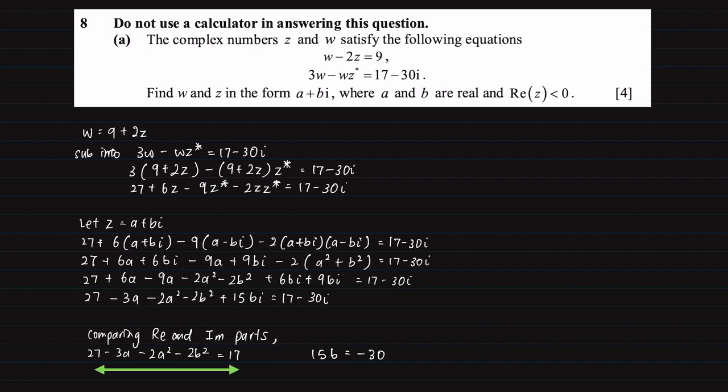Now the left hand side is actually quite complicated so we can find the value of b instead. Straightforward it is minus 2 by dividing 15 on both sides. So take b equals minus 2 and substitute it back into 27 - 3a - 2a² - 2(-2)² equals 17.